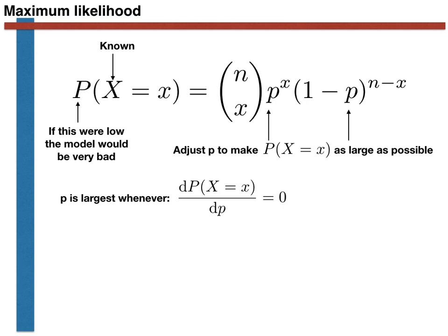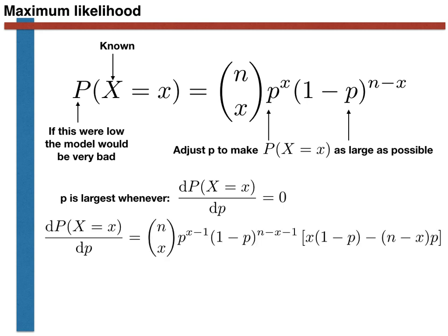When we do this differentiation for the function shown on the right-hand side of the equation at the top of the slide, we find, after some manipulation, that the derivative with respect to the parameter small p is given by the following expression. Now, notice that the binomial coefficient is always greater than zero and that P must be between zero and one. Consequently, this whole part outside the bracket cannot equal zero. It is the term in the bracket that must equal zero, as shown here.